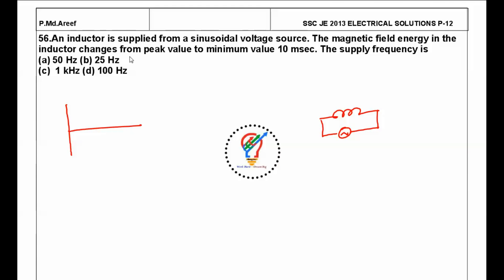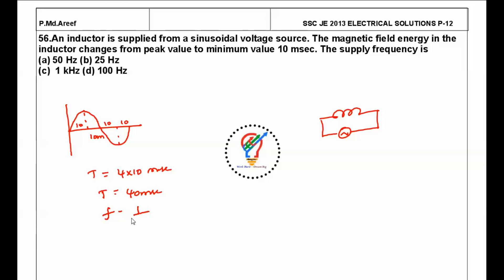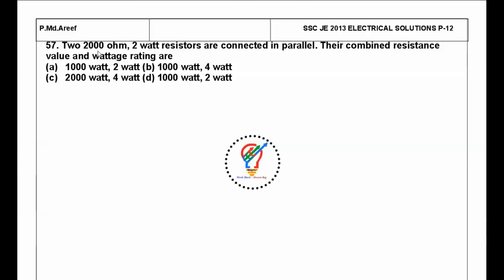The inductor is supplied from a sinusoidal voltage source. The magnetic energy changes from peak to minimum value in 10 milliseconds. So here it is 10 milliseconds, and completing a full cycle of supply — 10 and 10 — the total time period T is 4 into 10 milliseconds, which is 40 milliseconds. Frequency = 1/T = 1/(40×10⁻³) = 25 Hz. So the answer is B.